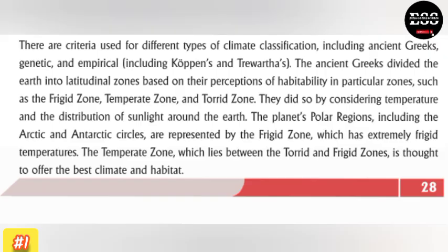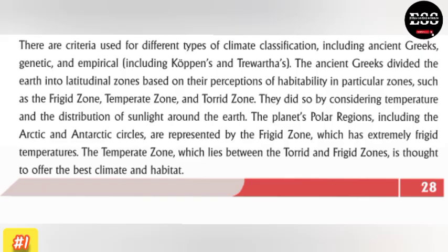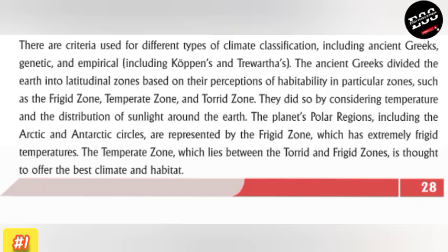The Greek classification was developed by considering temperatures and the distribution of sunlight around the earth. The planet's polar regions, including the Arctic and the Antarctic Circle, are represented by the freeze zones, which have extremely cold temperatures. The temperate zones, which lie between the torrid and freeze zones, offer the best climates and habitats.